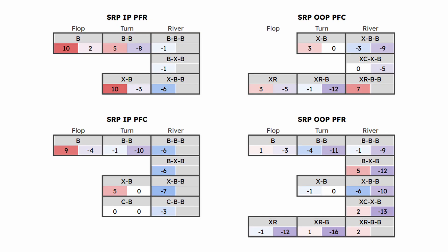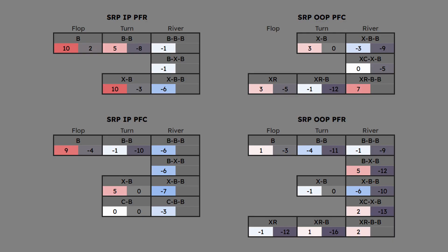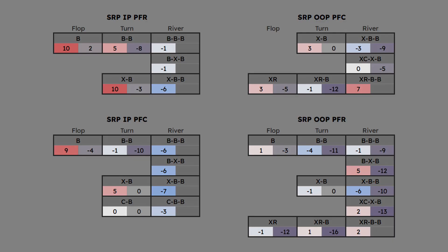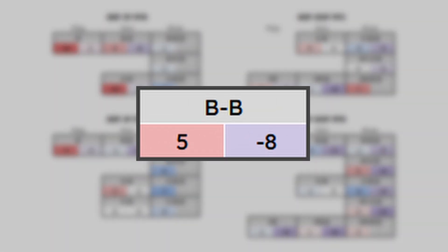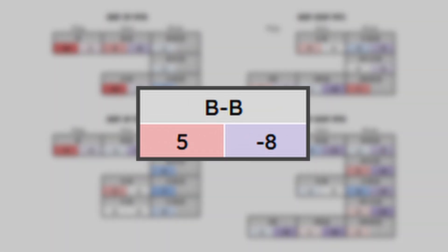And now it's time for the big reveal. As you can see, in most common single-raised nodes, regs will bet far too many strong hands relative to their second and third pairs. For example, if we look at in-position's turn-barrel node, called bet-bet, you'll see that they will bet their top pairs or better around 5% more often than the solver, and bet their second and third pairs 8% less often than the solver. These numbers might seem small, but we've already seen just how big the impact gets.